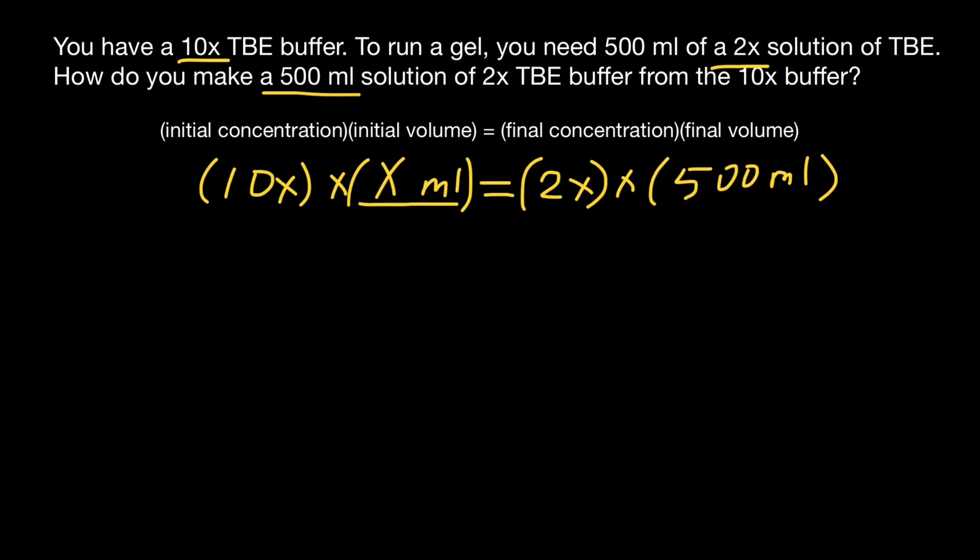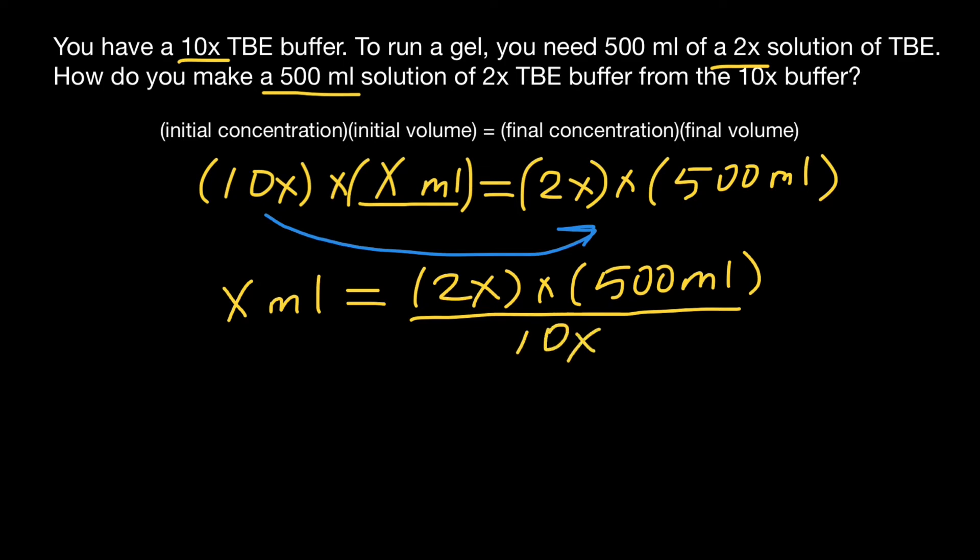So we leave X on one side and all known numbers on the other side. We are going to get X milliliters, which would equal 2X times 500 milliliters, divided by 10X concentration. So our X milliliters is going to equal 100 milliliters.